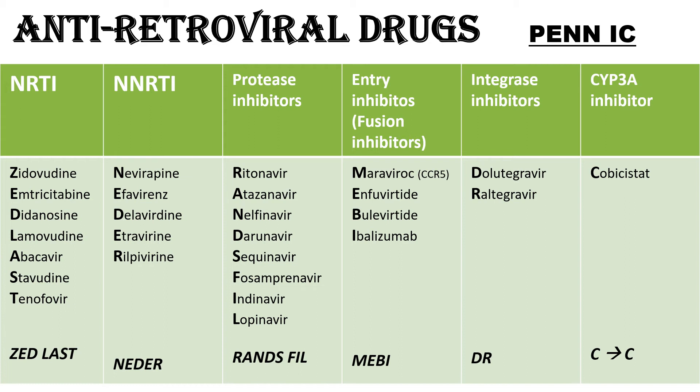The mnemonic for Entry Inhibitors is MAYBE. Among the Integrase Inhibitors we have two drugs — the mnemonic is DR: Dolutegravir and Raltegravir. The CYP3A Inhibitor is Cobicistat, easy to remember as C4C.